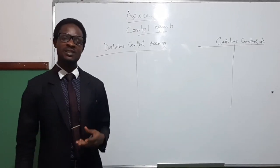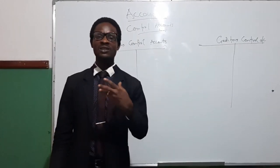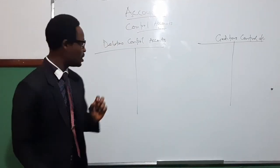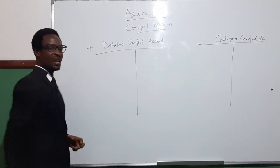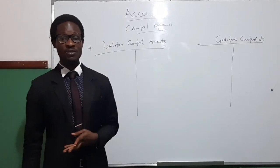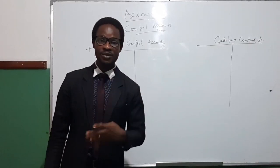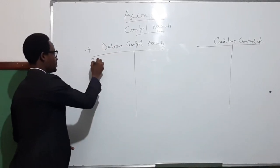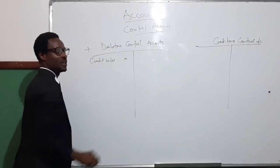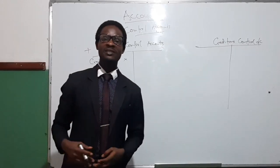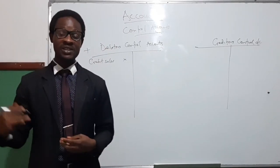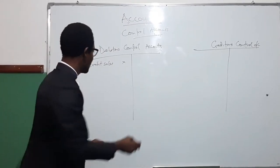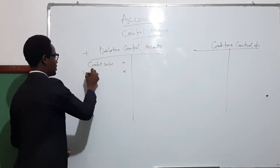Any transaction that will increase what debtors are owing, or the value of debtors, will be in the debit side of the debtors control account. An example of items that will increase what customers are owing is credit sales — credit sales will increase what debtors owe. Sometimes customers may delay their payment and the business may charge them interest on the overdue account; that will also increase what they are owing — this is called interest charged.